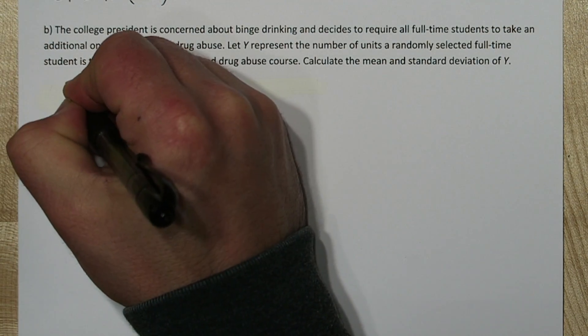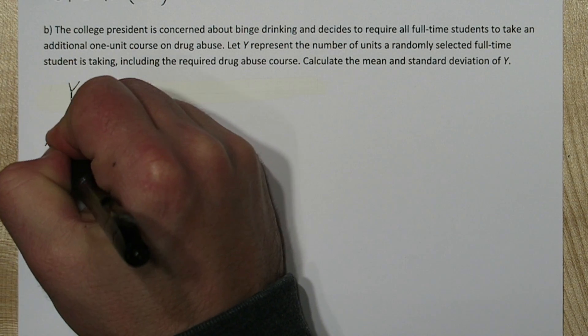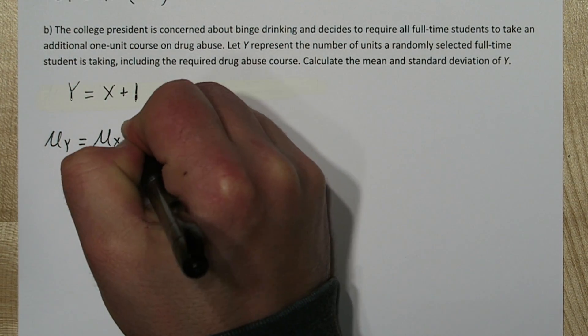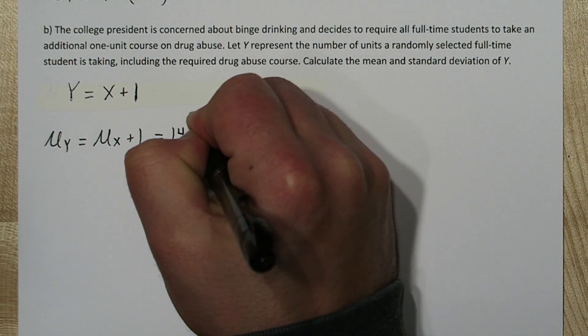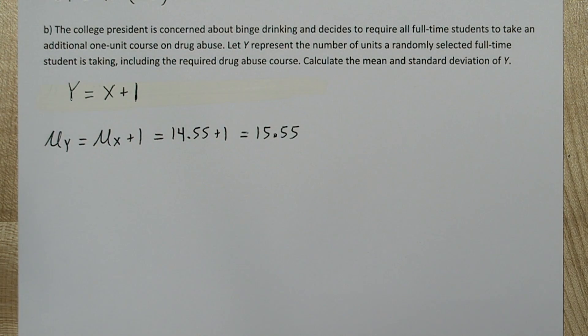In part b, our new random variable y is simply our old random variable x plus 1. So what will our mean and standard deviation be? Using what we just discussed, the mean of y will equal the mean of x plus 1. So 14.55 plus 1, which is 15.55.